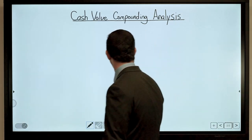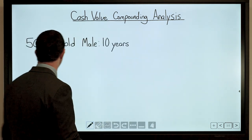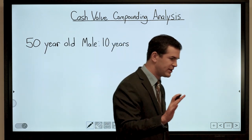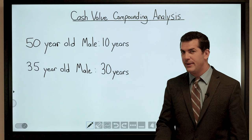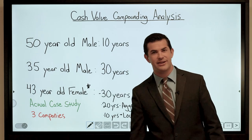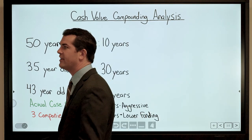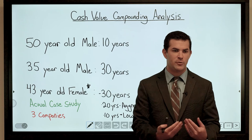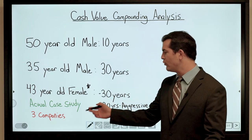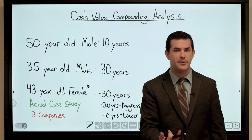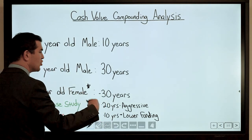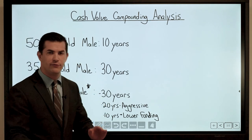What we're going to look at is a cash value compounding analysis. Case studies include: a 50-year-old male with a 10-year funding period at $100,000 per year; a 35-year-old male paying into the policy until age 65, a 30-year period; and a 43-year-old female, an actual case study where we looked at several companies and several ways to blend a policy, with funding for 30 years.